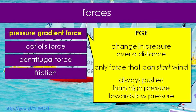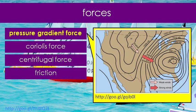The pressure gradient force, mathematically, is just the change in pressure between two locations — the change in pressure divided by the distance between them. This is the only force that can actually start to put winds in motion, and it always acts to push the air from high pressure towards low pressure. It doesn't necessarily mean the air is going to move that way, because other forces may be canceling out or changing the net acceleration. But the pressure gradient force's contribution is always to push air from high pressure towards low pressure.